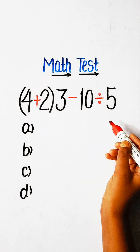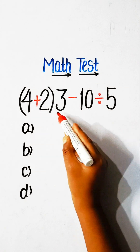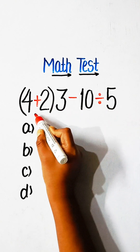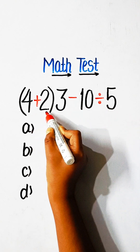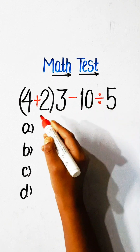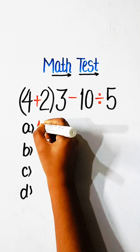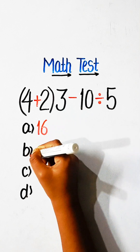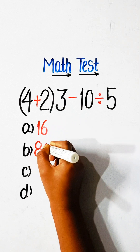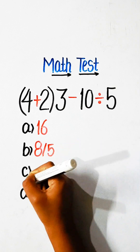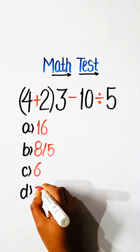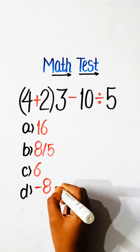Hello friends, let's solve another math expression: 4 plus 2 multiply by 3 minus 10 divided by 5 equals to what? Option A: 16, Option B: 8/5, Option C: 6, Option D: minus 8/5.